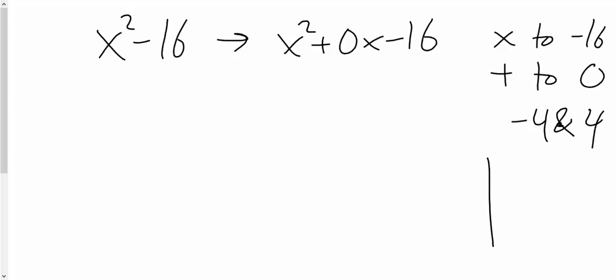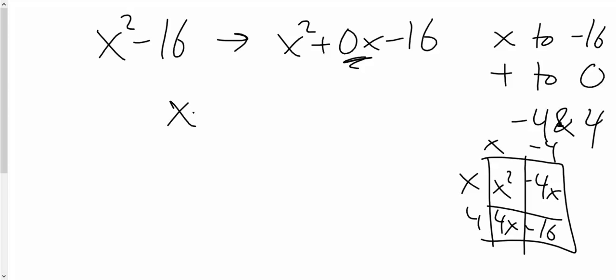And you can check. I'll show you that right here. x minus 4, x plus 4. You have x squared, you have negative 4x, you have positive 4x. Those two combine to give you 0x, which is what we have right there. And then you have a negative 16. So this is the x minus 4, x plus 4.